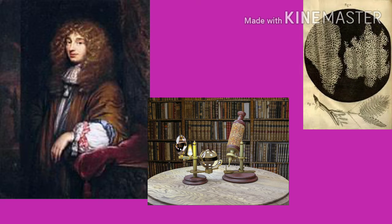The discovery of the cell was made possible by the invention of the compound microscope in 1665. Robert Hooke placed a piece of cork under the microscope and observed tiny pores in them, which resembled a honeycomb.